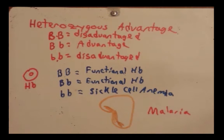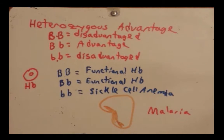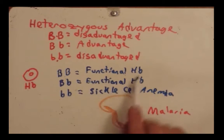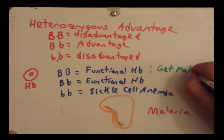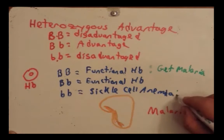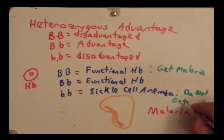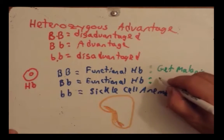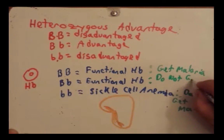In those areas, malaria is a major source of concern. Evolution has found a way to help individuals: individuals who are homozygous dominant (BB) — with functional hemoglobin — can get malaria. The individuals who are homozygous recessive (bb) do not get malaria. Interestingly, the people who are heterozygotes (Bb) also do not get malaria.